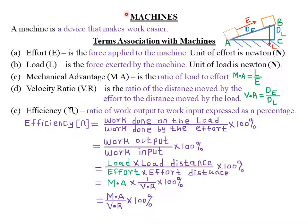We shall discuss that quote at the end of our class today. So today we are looking at machines. Let's start by defining what we mean by the term 'a machine.' A machine is simply a device that makes work easier. A very good example is the wheelbarrow, whereby if you carry some luggage with your bare hands versus using a wheelbarrow, it becomes easier using the wheelbarrow. Therefore, a wheelbarrow is a good example of a machine.